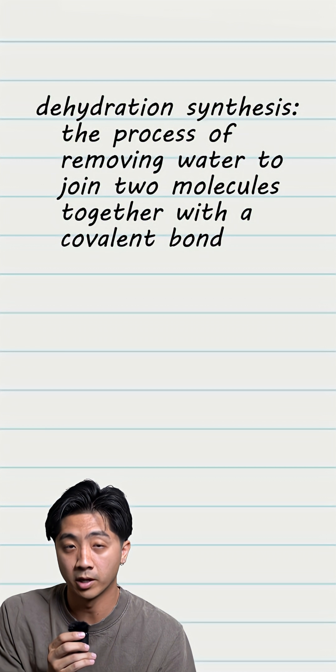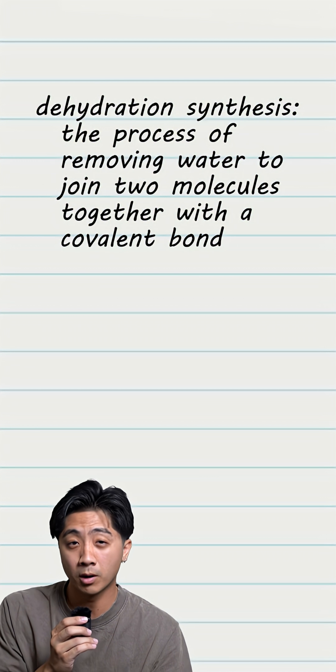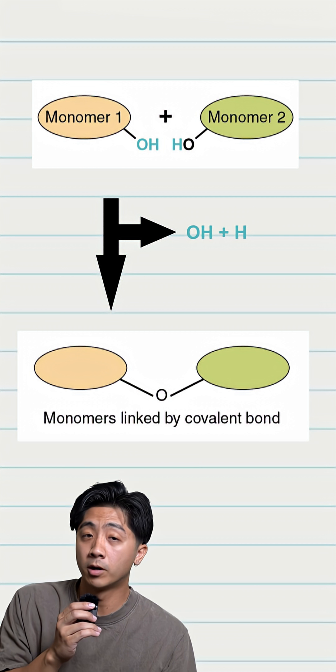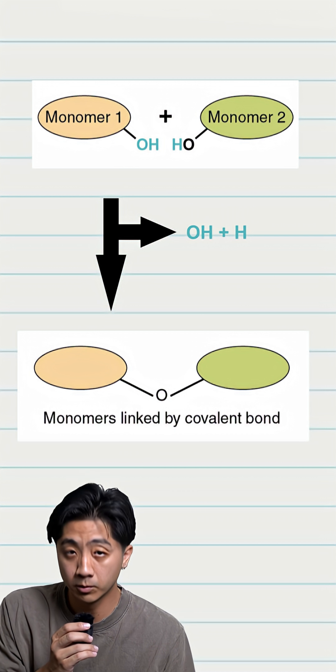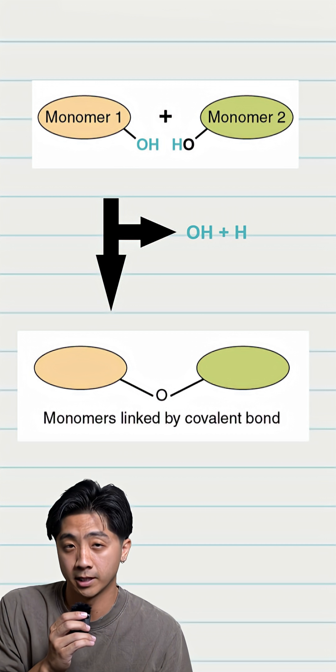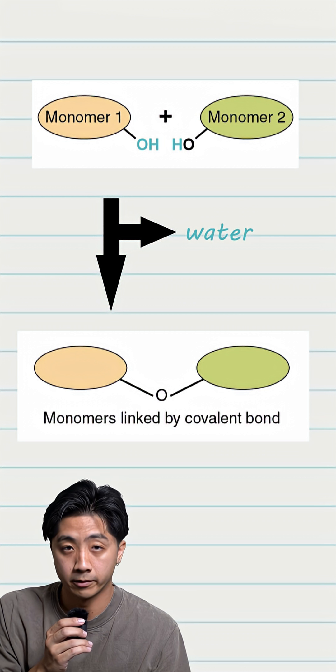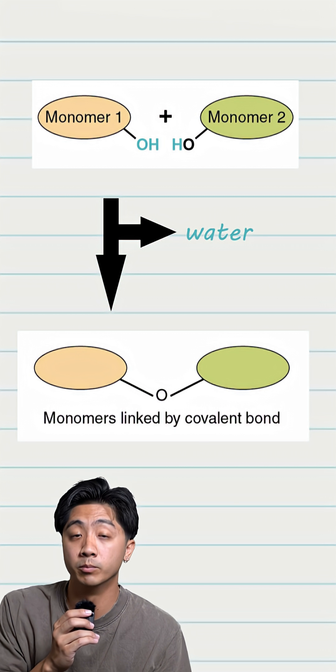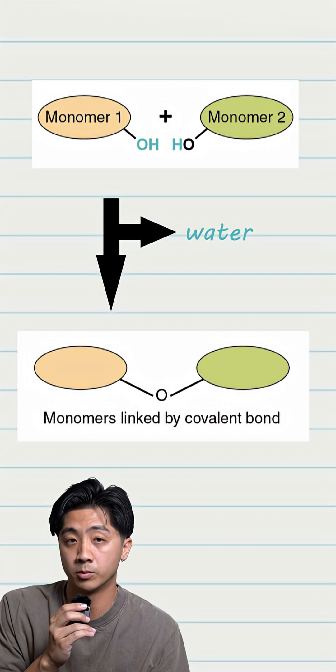Dehydration synthesis is the process of removing water to join two molecules together with a covalent bond. The OH from one monomer and the H from another are both removed to connect the two monomers together. The OH and H make water. So dehydration synthesis means water is removed to join two monomers together.